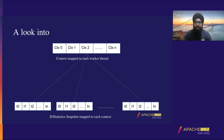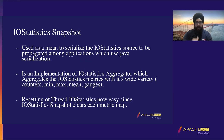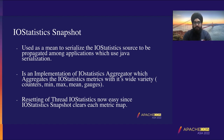IOStatistics snapshot is a class in IOStatistics itself which is an implementation of the IOStatistics aggregator. Since IOStatistics covers a wide variety of metrics — not just counters — it contains maps for all the counters, min, max, mean, and gauges. Every bit requires a different level of aggregation, and that is already set up in the IOStatistics snapshot, making it really easy and lining up perfectly for thread-level work.